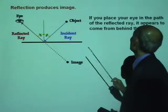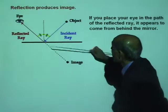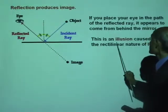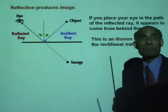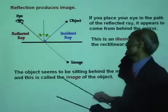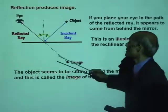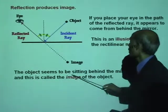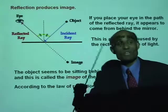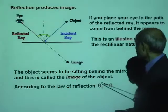If you place your eye in the path of the reflected ray, the reflected ray appears to come from behind the mirror. This is actually an illusion caused by the rectilinear propagation of light. The object seems to be sitting behind the mirror, and this is called the image of the object. So reflection produces images.